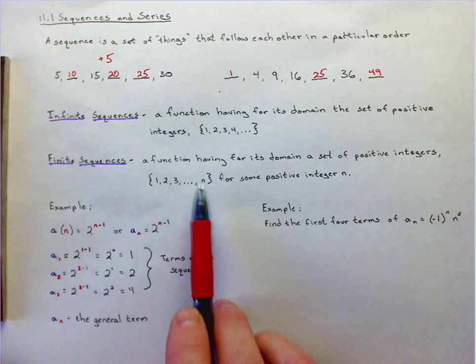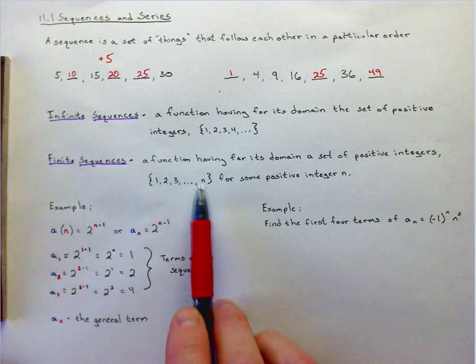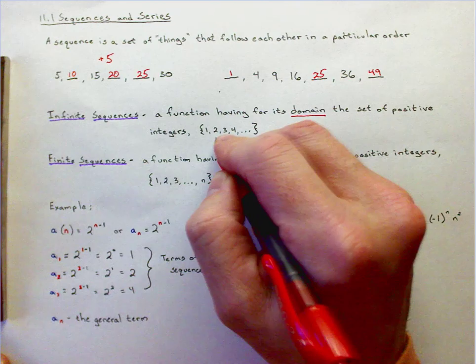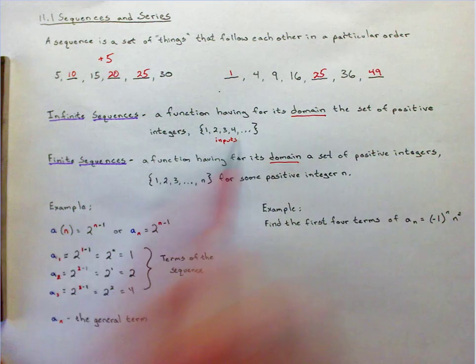And then for finite, it's the same principle, except we're going to have a place where we stop. Again, it will be the domain that we're speaking of. So these are our inputs, what we're plugging in. So that doesn't mean that what I get out is going to be 1, 2, 3, 4 all the way up. These are our inputs where we're plugging in. So let's take a look at that.